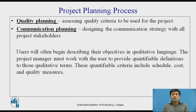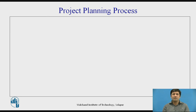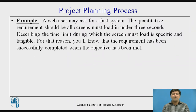Users often describe their objectives in qualitative language. The project manager must work with the user to provide quantifiable definitions for those qualitative terms. Quantifiable criteria include schedule, cost, and quality measures. For example, a web user may ask for a fast system — the quantitative requirement should be that all screens must load in under 3 seconds. Describing a specific time limit makes the requirement tangible, so you will know when the objective has been successfully met.